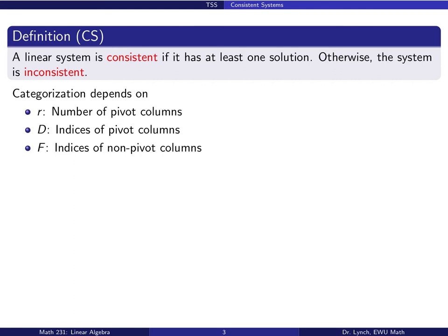We say that a linear system is consistent if it has at least one solution. Otherwise, the system is said to be inconsistent. So a system is consistent or it's not — it's consistent if it has at least one solution, and if it has no solutions, then we say it's inconsistent. We'll categorize this concept of consistent and inconsistent with this partition of column indices that we talked about before.